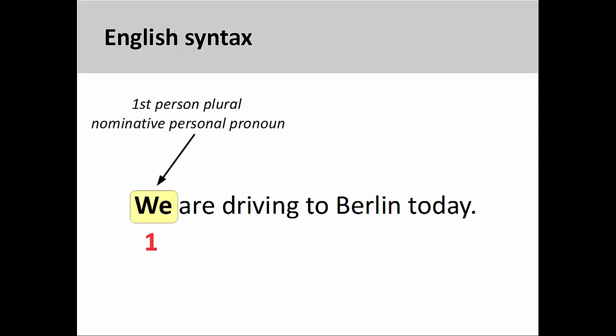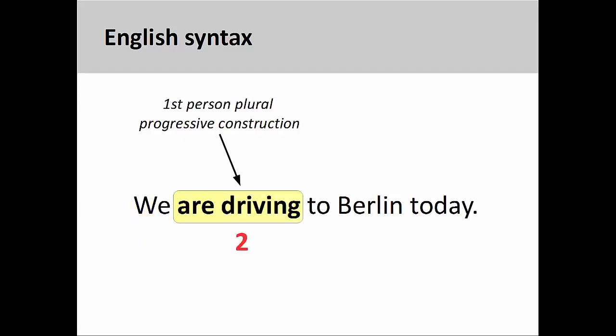In English statements, the subject generally comes in the first position. Here the subject is the first person plural nominative personal pronoun, 'we.' The verb — here a first person plural progressive construction — comes in the second position. The progressive construction in English describes an ongoing event and consists of a conjugated form of the verb 'to be' and the present participle of a verb.